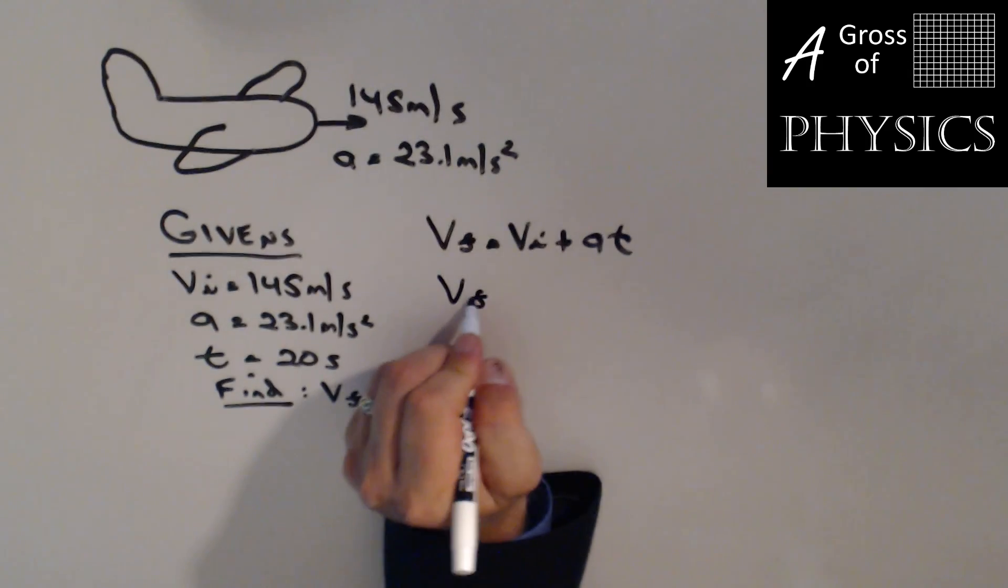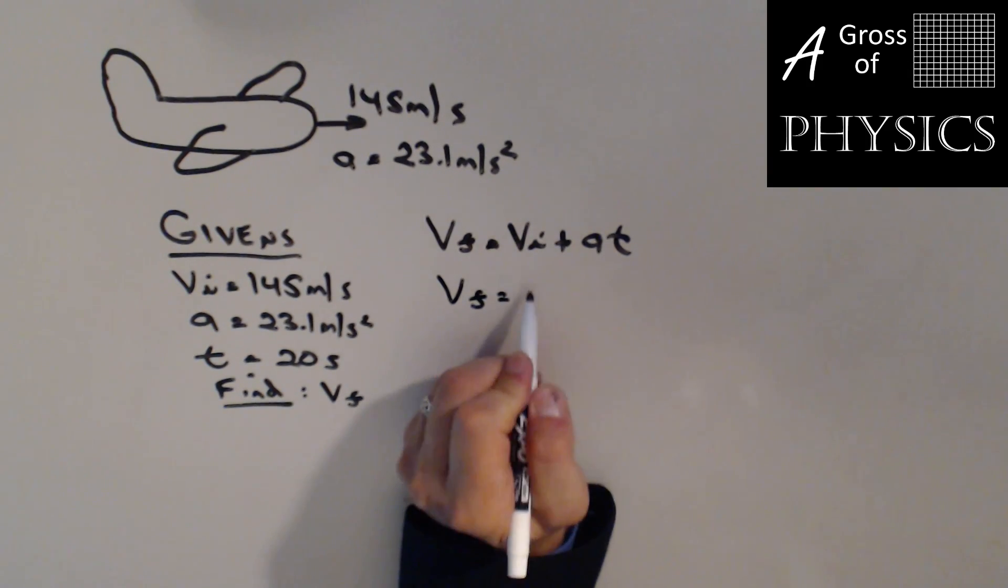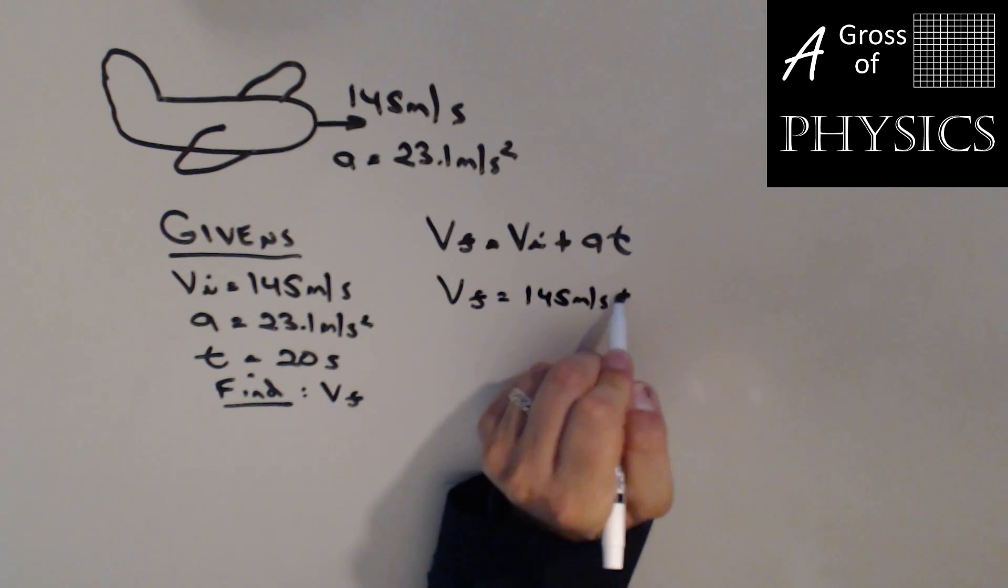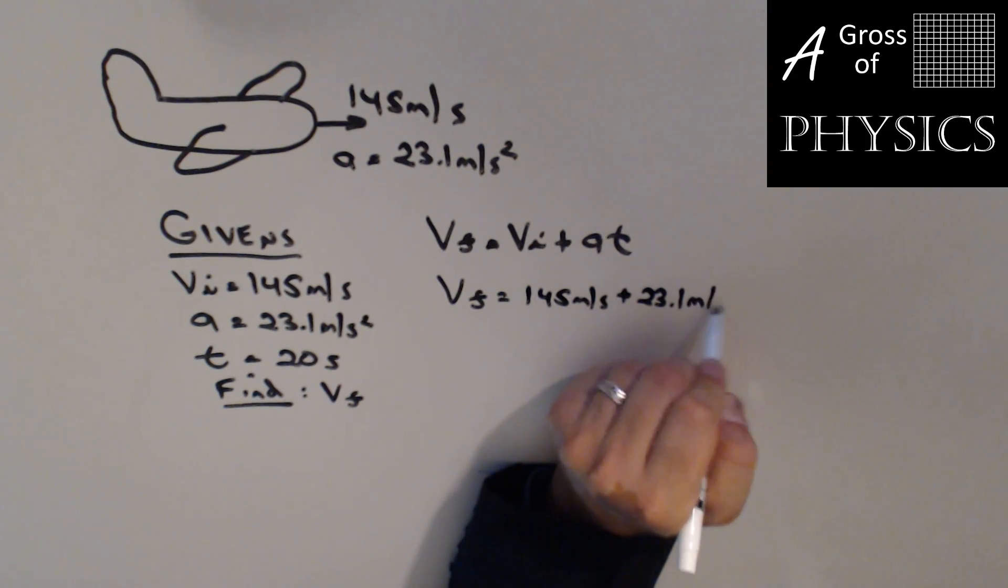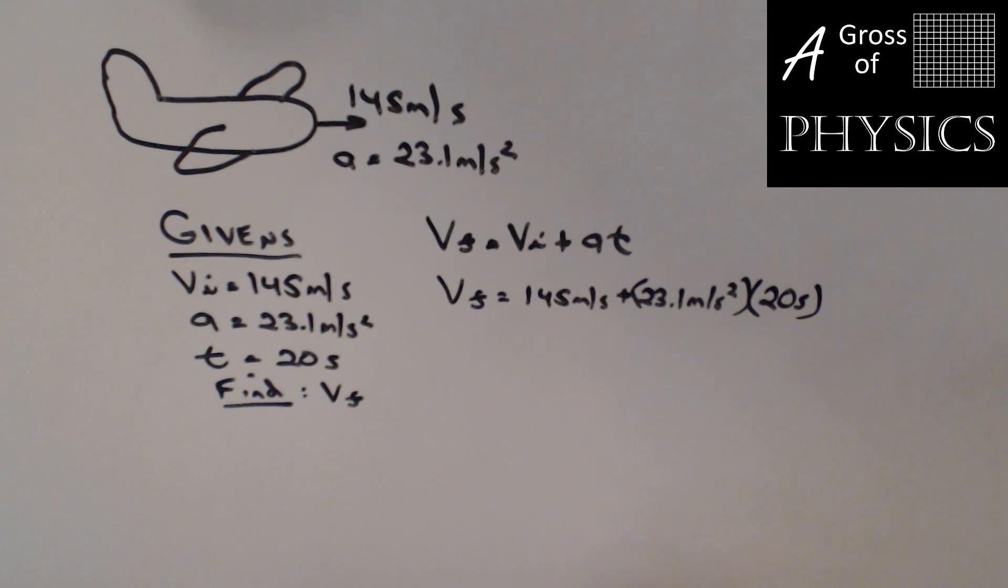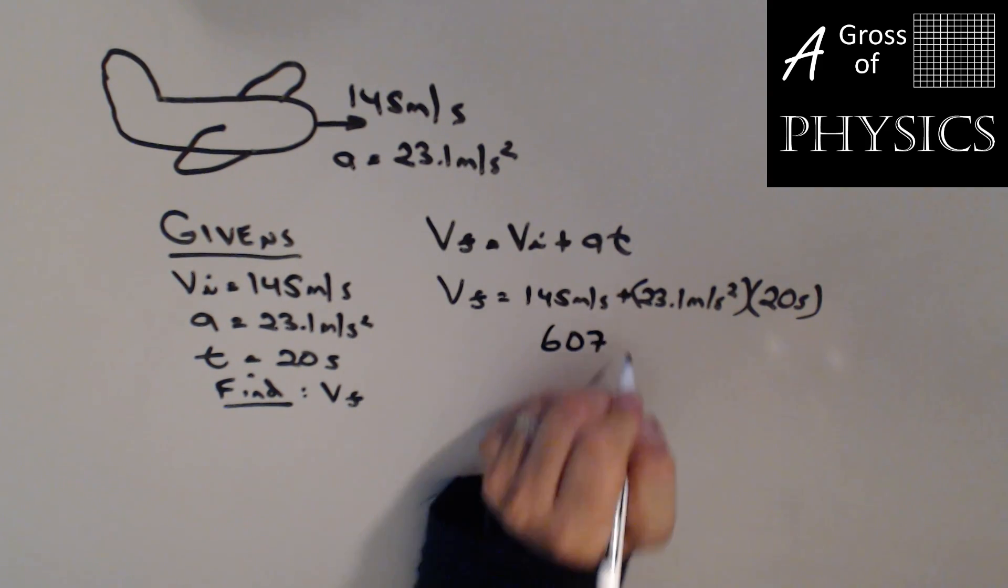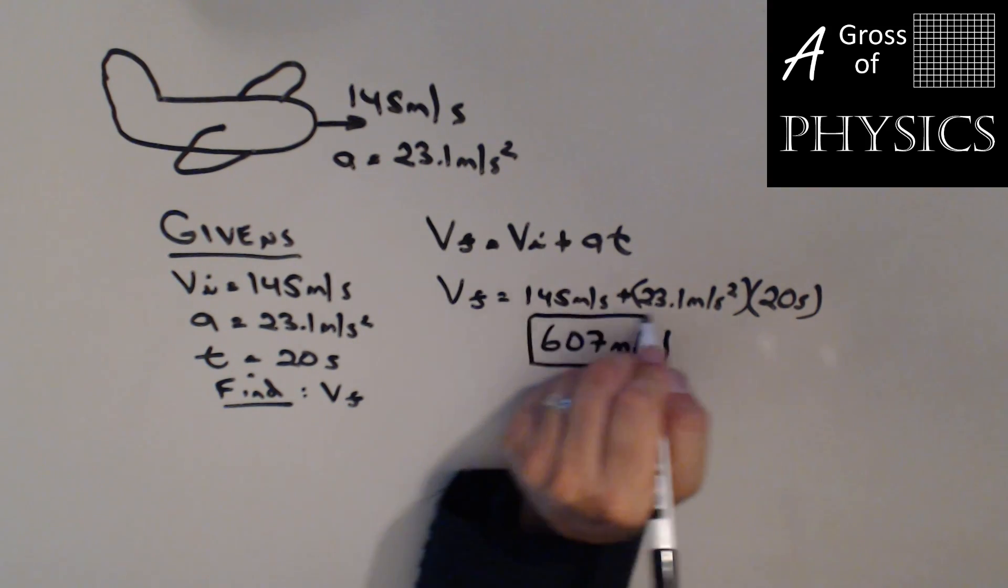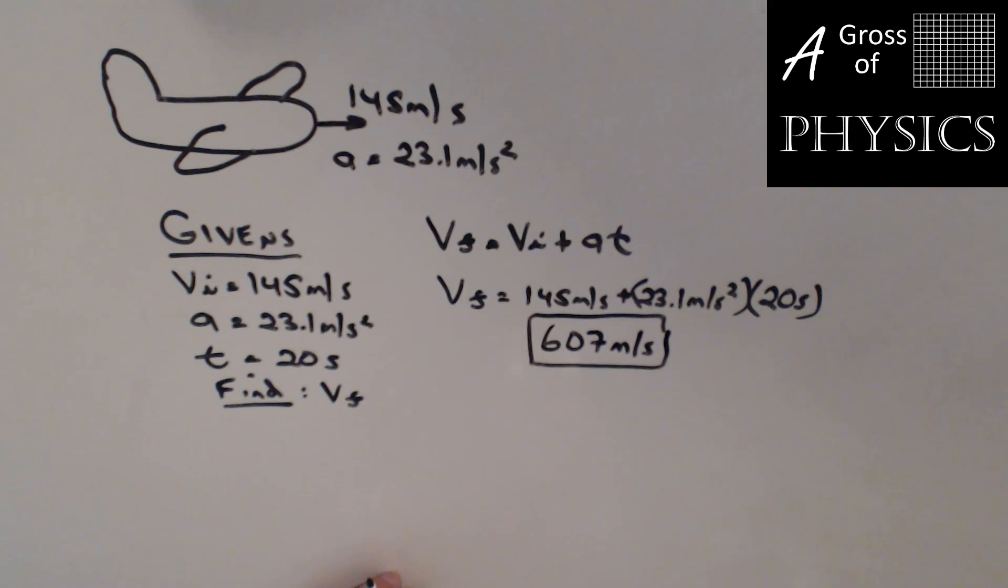And it's already set up so that we solve for VF. 145 plus 23.1, make sure you include your units, times 20 seconds. Now to calculate this, we're going to type 145, and we're going to add that to, and I'm going to put it in parentheses, 23.1 times 20, close parentheses. Hitting equal, we get 607 meters per second. And that is how you solve that problem.